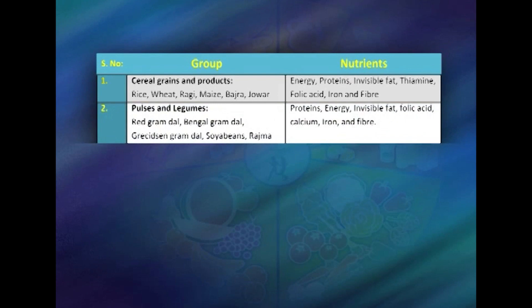The second group is pulses and legumes, which includes dals such as red gram dal and green gram dal, and whole grams like rajma, chole, and chana. This food group is rich in proteins and also provides energy, invisible fat, and certain amounts of calcium, iron, and folic acid.